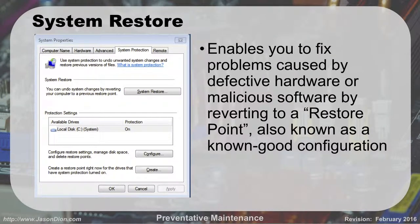System Restore is under your system properties. It enables you to fix problems caused by defective hardware or malicious software by going back to a previous restore point, which was your last known good configuration. If you have system protection on, it will create system restore points at regular intervals and any time major events happen. Or you can go in and hit Create to make one at any point you want — for instance, after installing a bunch of software and testing it, you might create a restore point so you know it's good and can use it as a rollback if needed.